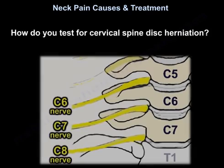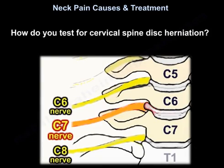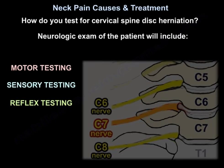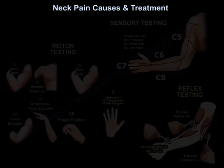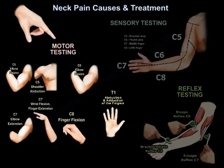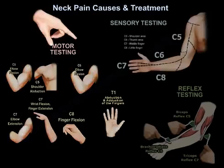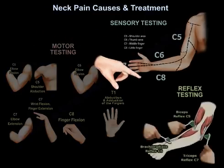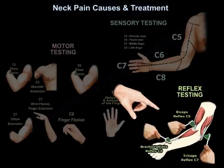How do you test for cervical spine disc herniation? You test the motor, the sensory, and the reflexes. This is how you test the motor strength of the nerve roots from C5 to T1. This is how you test sensation, as shown in the diagram. And this is how you test the reflexes, as shown in the diagram.